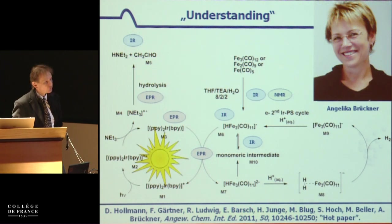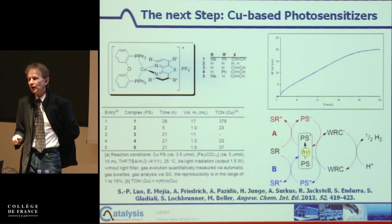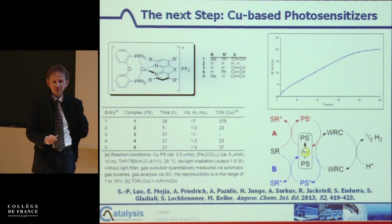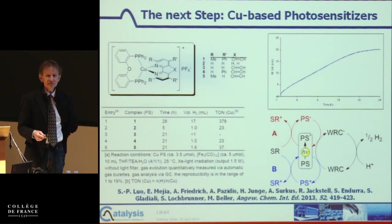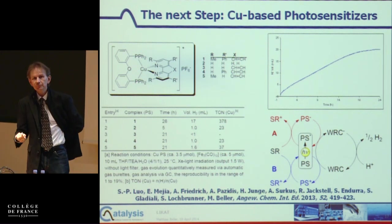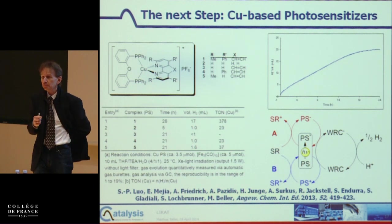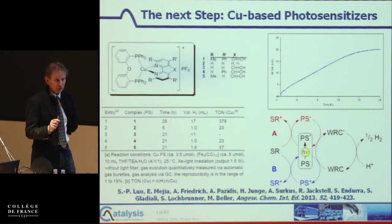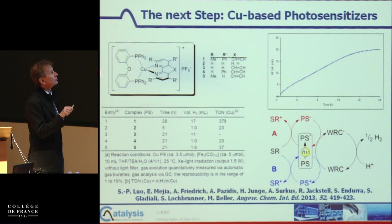This is Angelica Brückner, who is the specialist with whom we cooperate in that area. Of course, using iridium or any noble metal for energy purposes on a large scale is very difficult because these metals are expensive and not easily available. There is definitely a large body of research toward developing hydrogen-generating systems based on so-called base metals or non-noble metals. We would love to develop an iron-based photosensitizer — to my knowledge none exists so far — and with iron we were not successful, but we developed a copper-based photosensitizer.